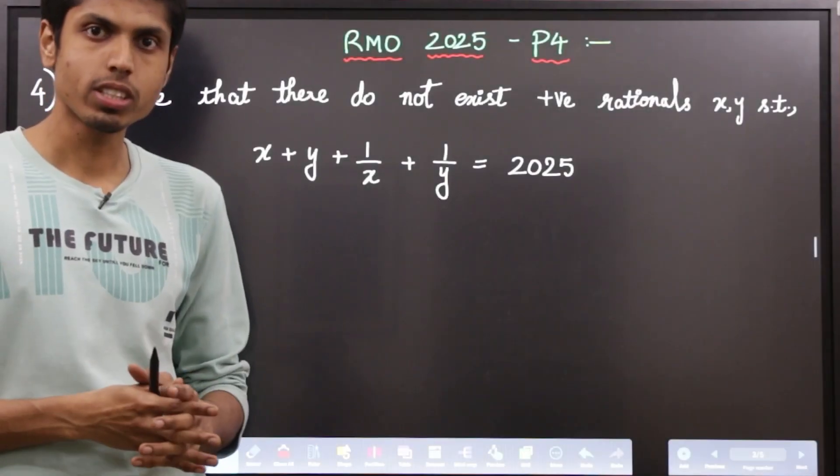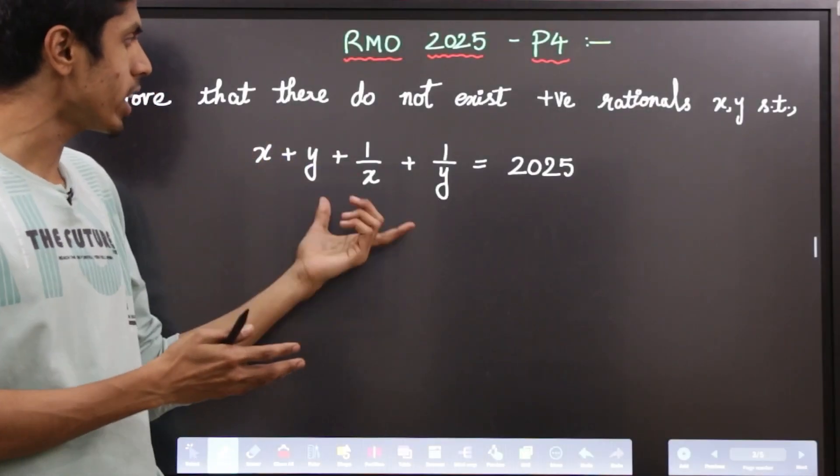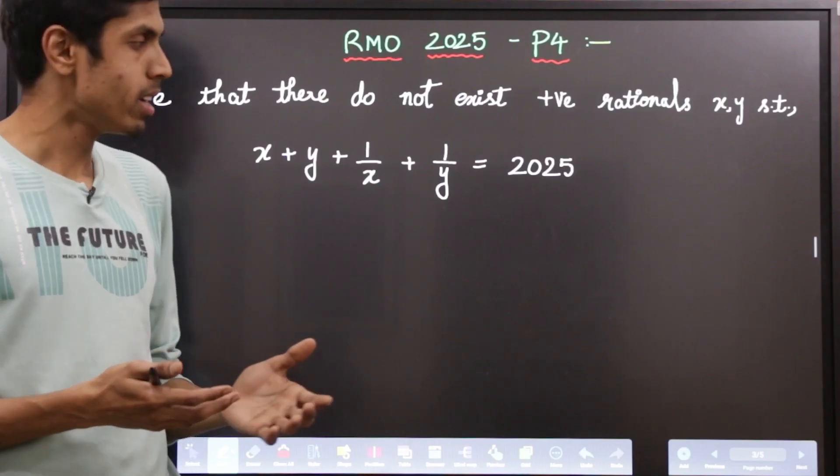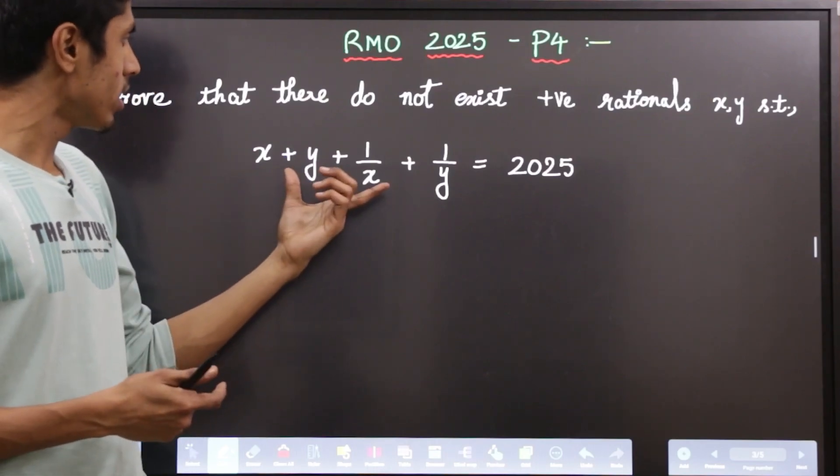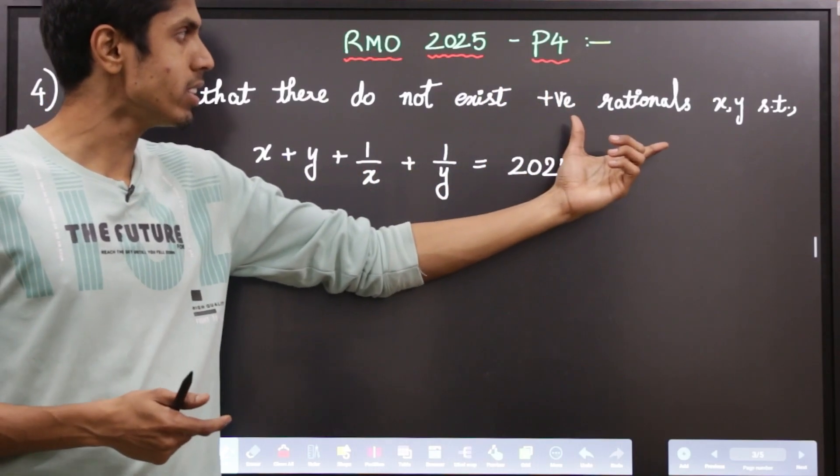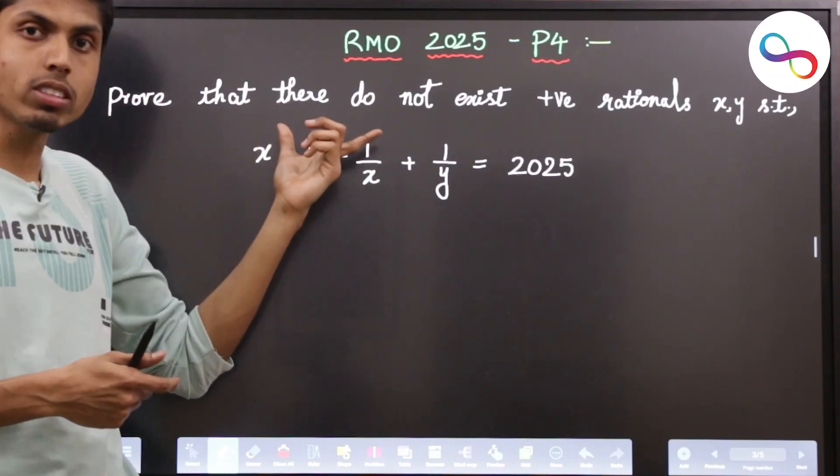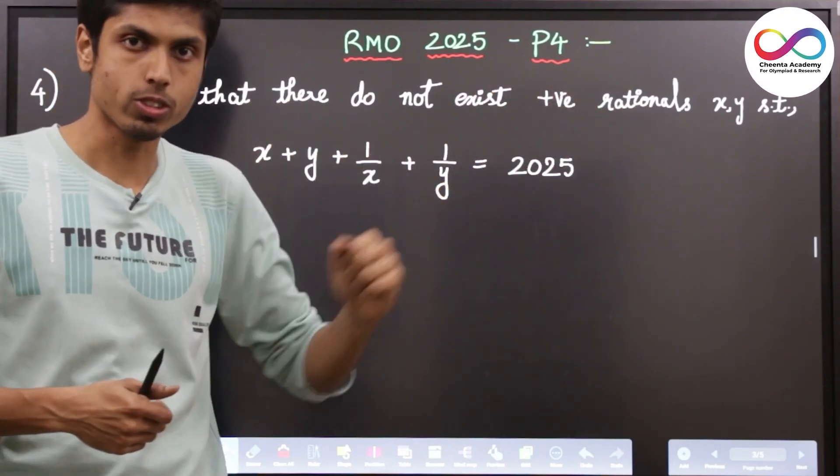A Diophantine equation is any equation whose variables are integers. Over here the variables are positive rationals, and you need to prove the non-existence of such positive rational solutions.